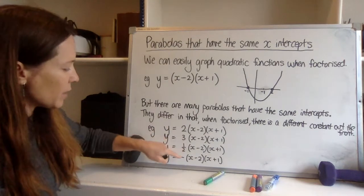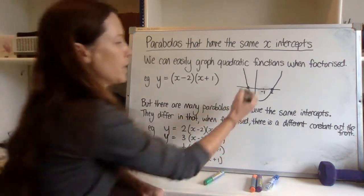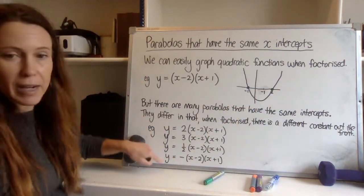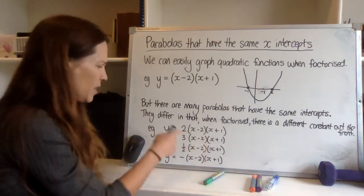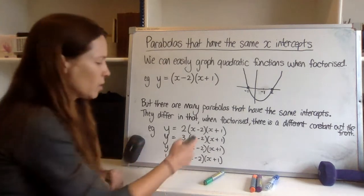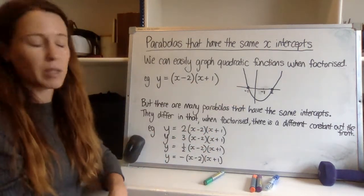So this number out the front is going to keep the intercepts where they are because after all if we let y equal 0 in any of these cases then either this or this or this would be 0 and this part can't be 0, it's 2. So it would have to be this part or this part and we'd get the exact same intercepts.